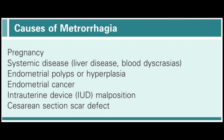Intrauterine devices, due to malpositioning or when embedded in the myometrium, can lead to metrorrhagia. In the case of cesarean section scars, infection, hyperplasia of the scar, abnormal collections, or hematoma can penetrate and cause metrorrhagia. These are the main causes of metrorrhagia.